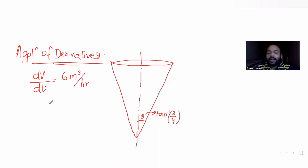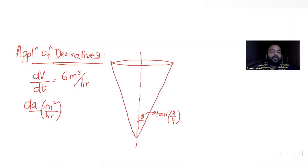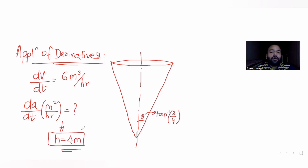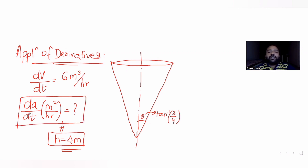We are asked to find the rate in square meters per hour at which the wet curved surface area of the tank is increasing. We need to find the change in the wet curved surface area of the cone with respect to time when the depth of the water in the tank is 4 meters. So height is given as 4 meters, and we need to find the change in curved surface area with respect to time.